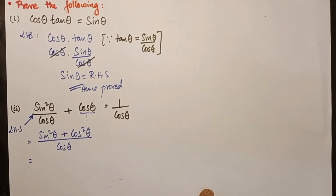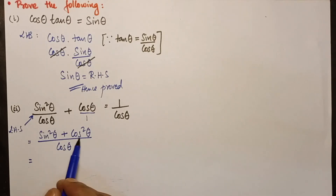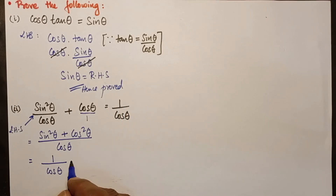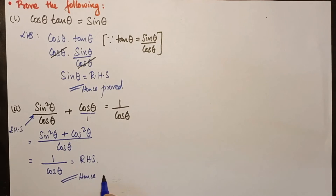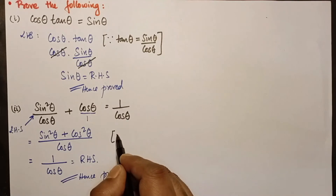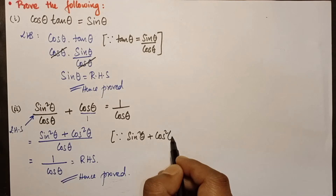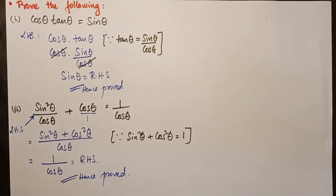Using the identity sin²θ + cos²θ = 1, the numerator becomes 1, giving us 1/cosθ, which equals the right-hand side. Hence proved. A helpful tip: write the formula sin²θ + cos²θ = 1 at the side so you can memorize it easily.